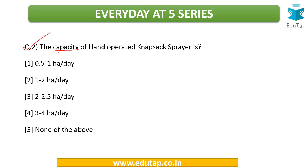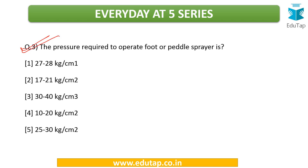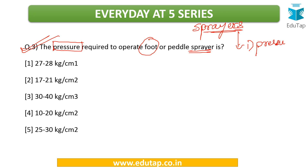Next question: what is the capacity of a hand operated knapsack sprayer? Whenever dealing with equipment, you need to know its capacity. The third question: what is the pressure required to operate a foot or pedal sprayer? When dealing with sprayers, two key parameters to know are the pressure of application and the capacity — if you know these for each sprayer, your preparation is complete.